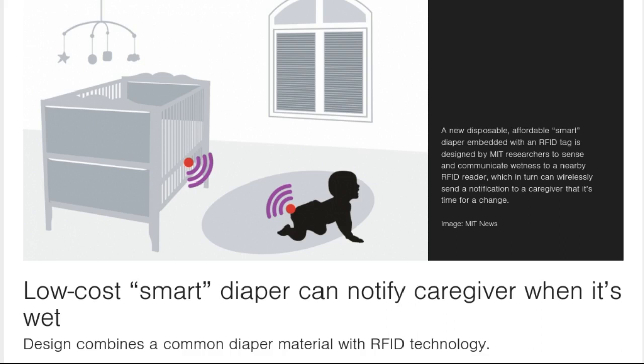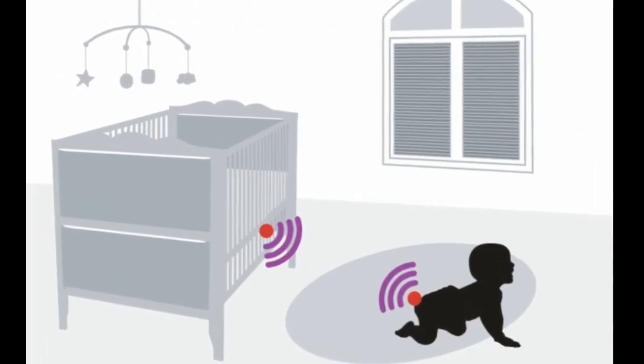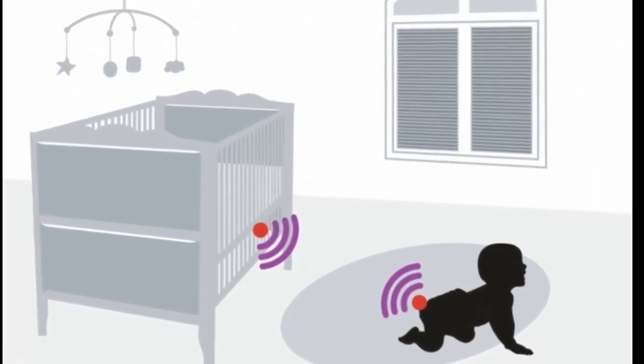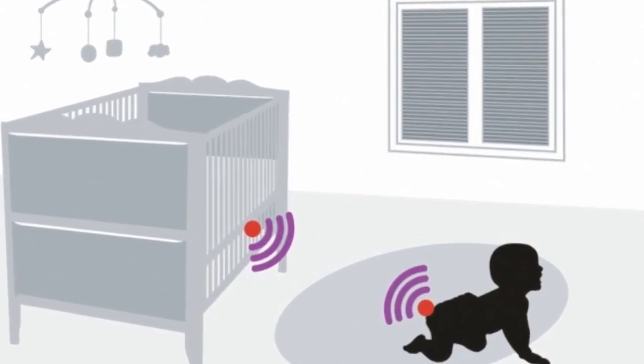When the hydrogel is wet, the material expands and becomes slightly conductive, enough to trigger the RFID tag to send a radio signal to an RFID reader up to one meter away.